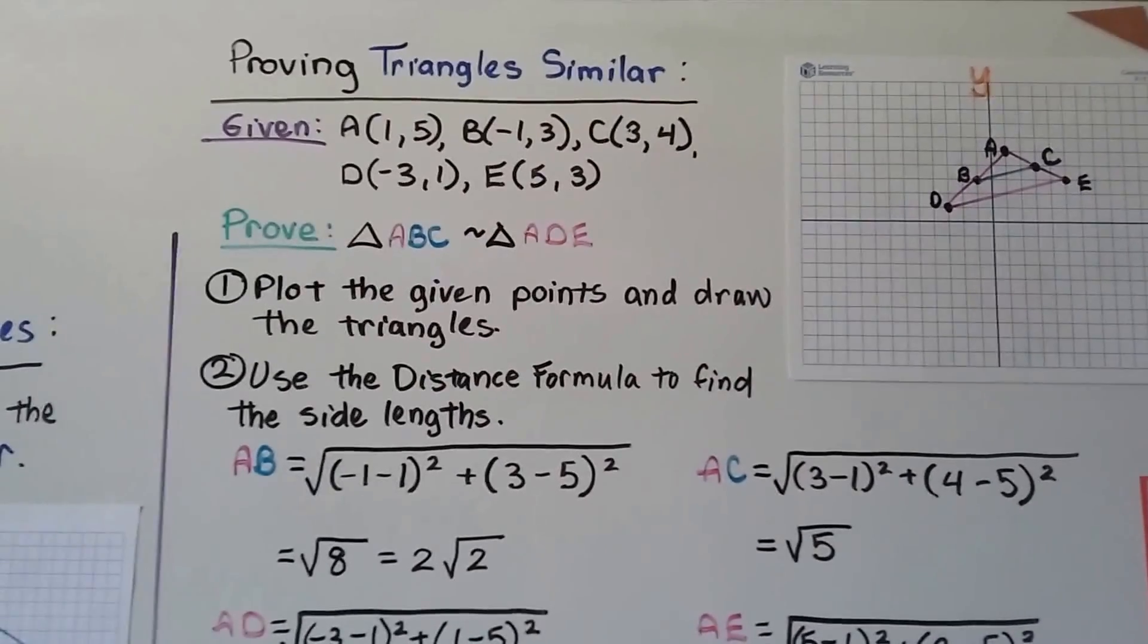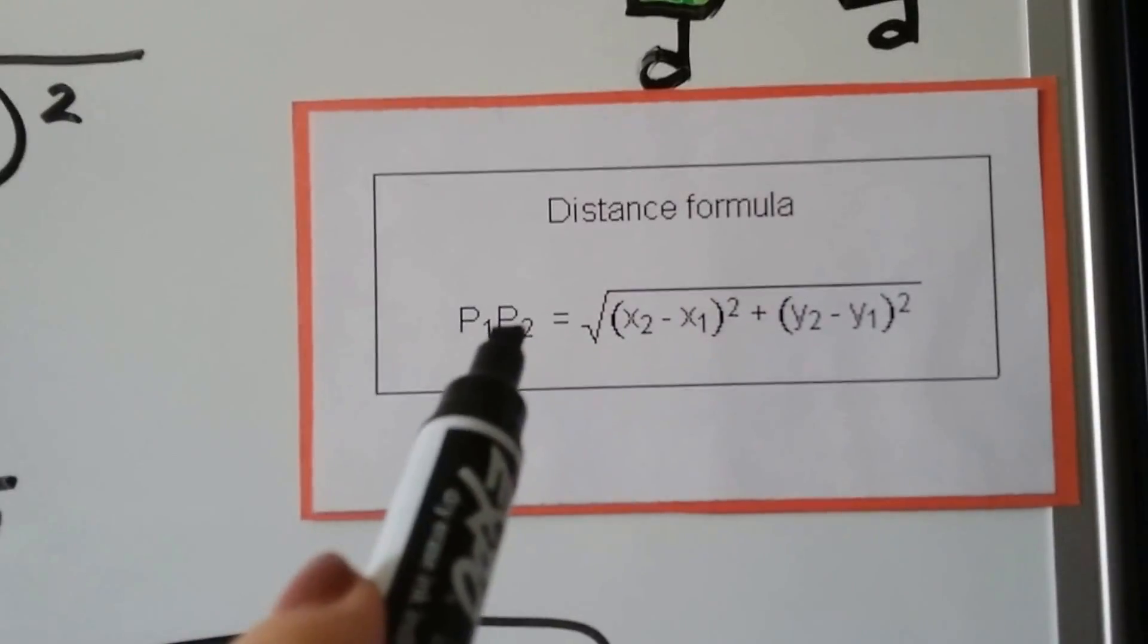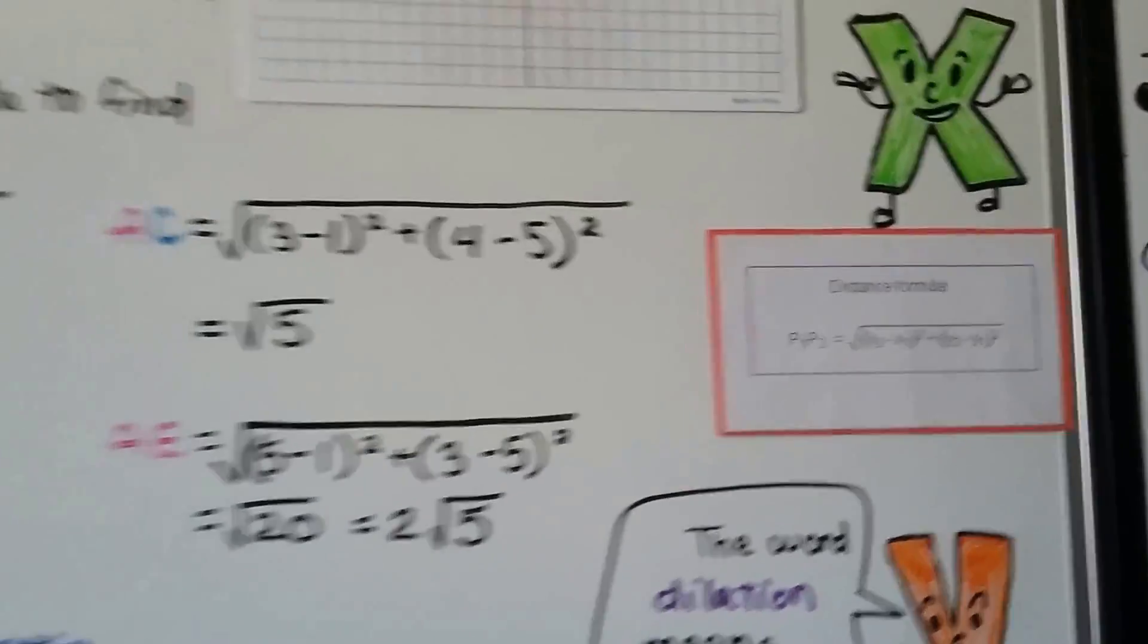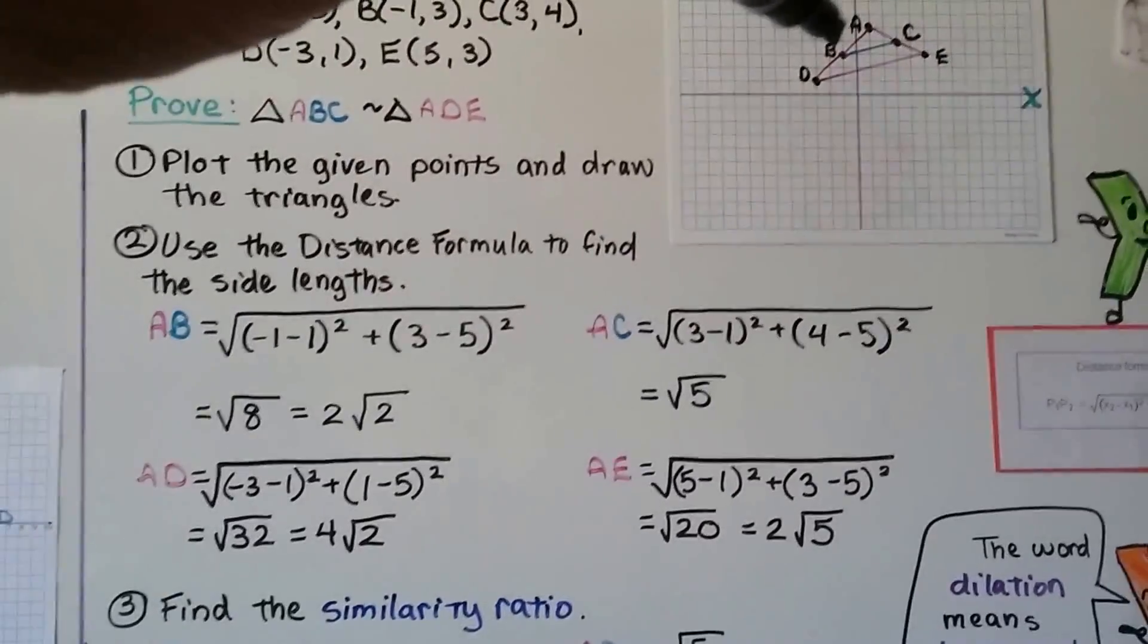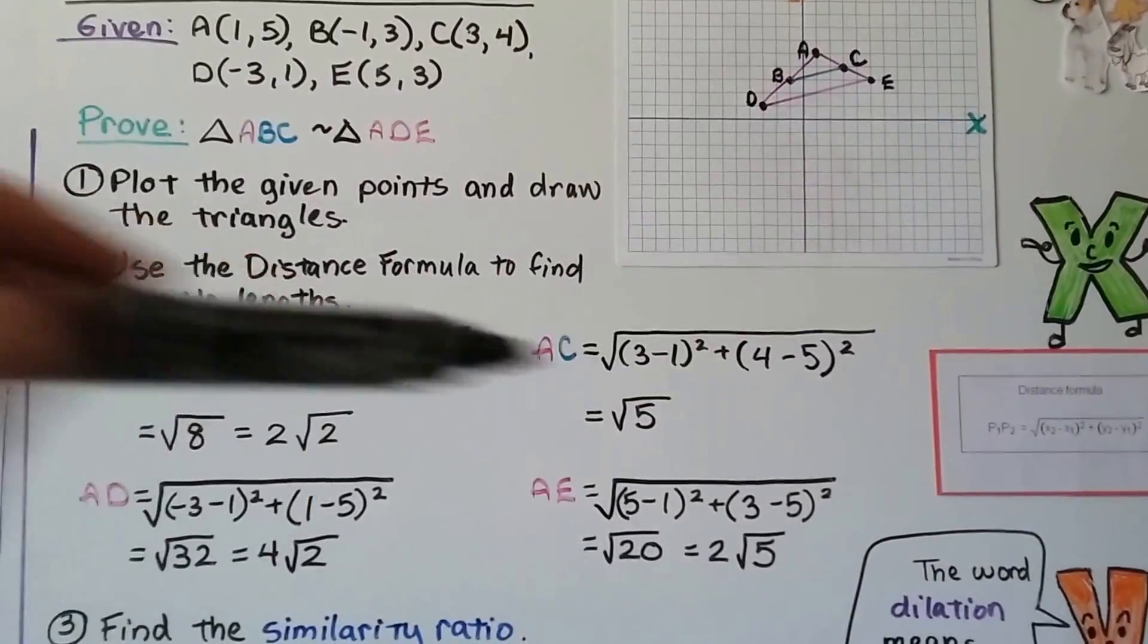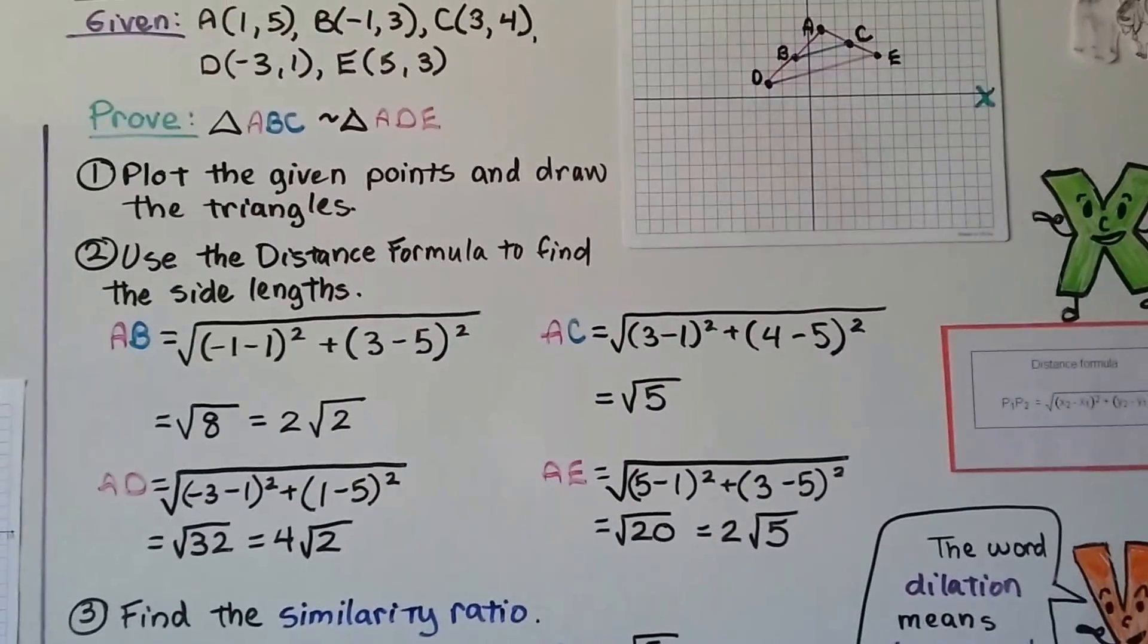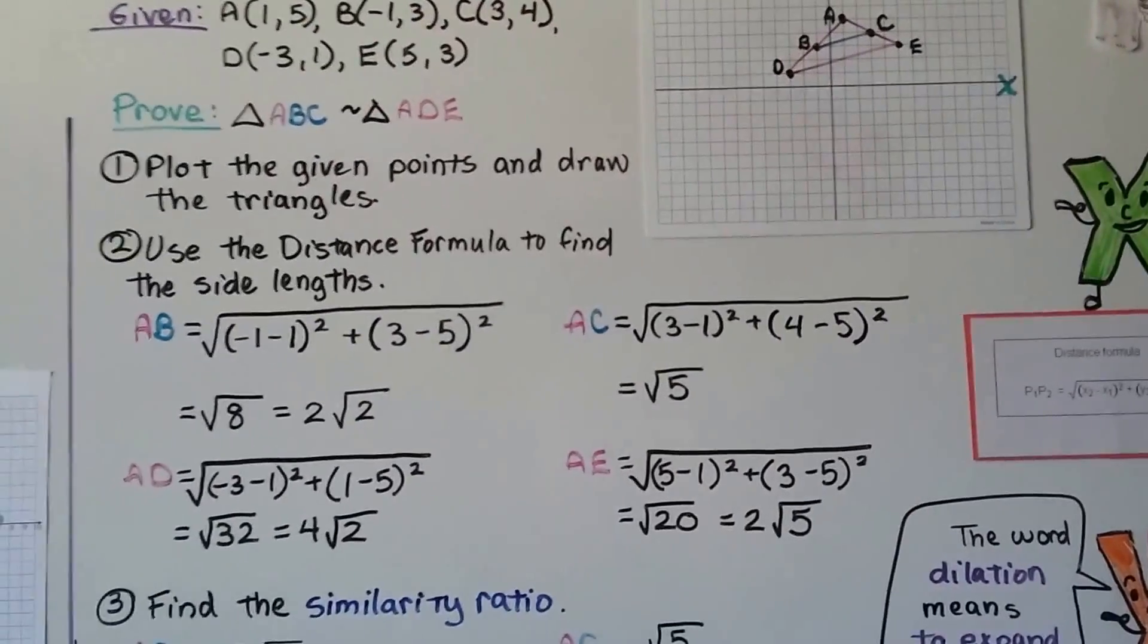We plot the given points and draw the triangles. Next, we use the distance formula to find the side lengths. From A to B is 2√2, and AC is √5. AD, this entire length here, is 4√2, and AE is 2√5.